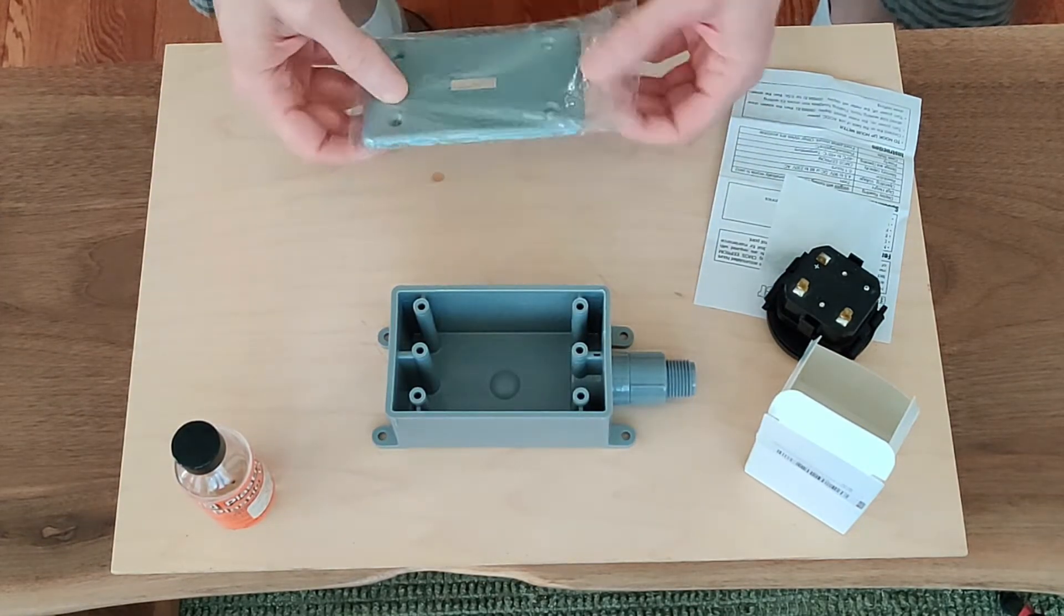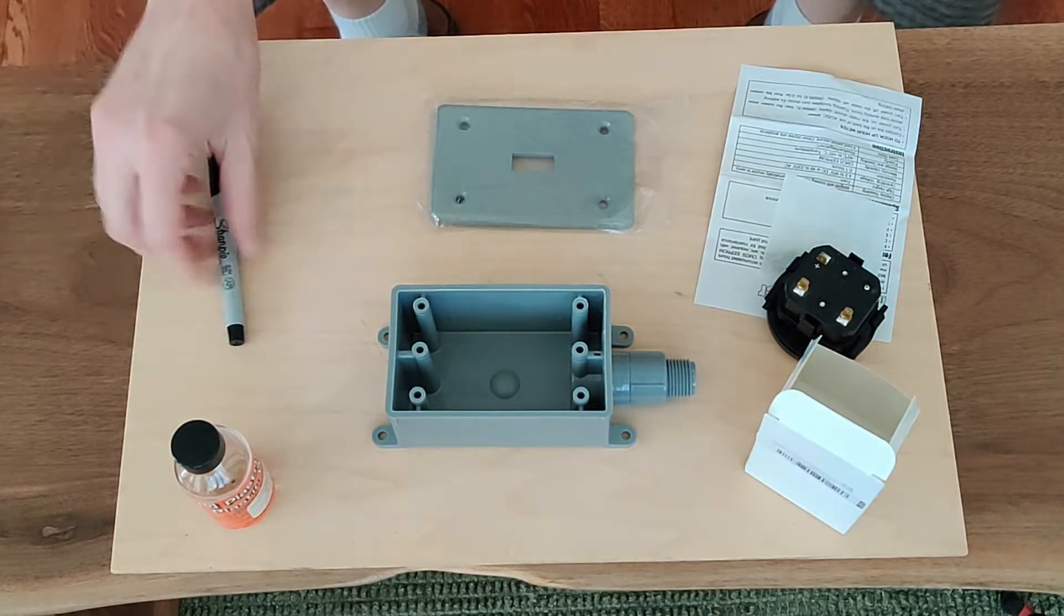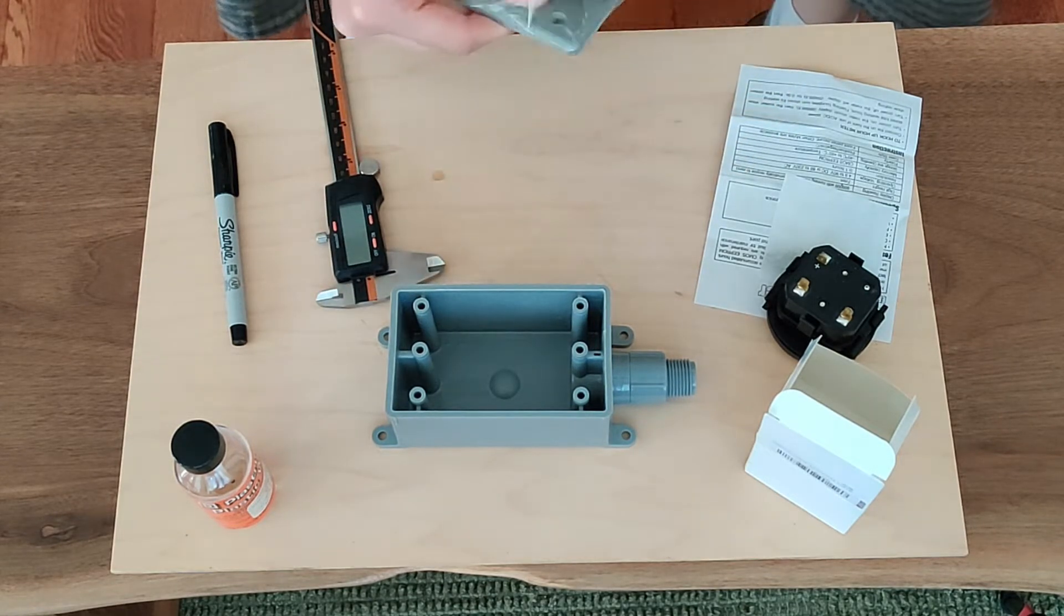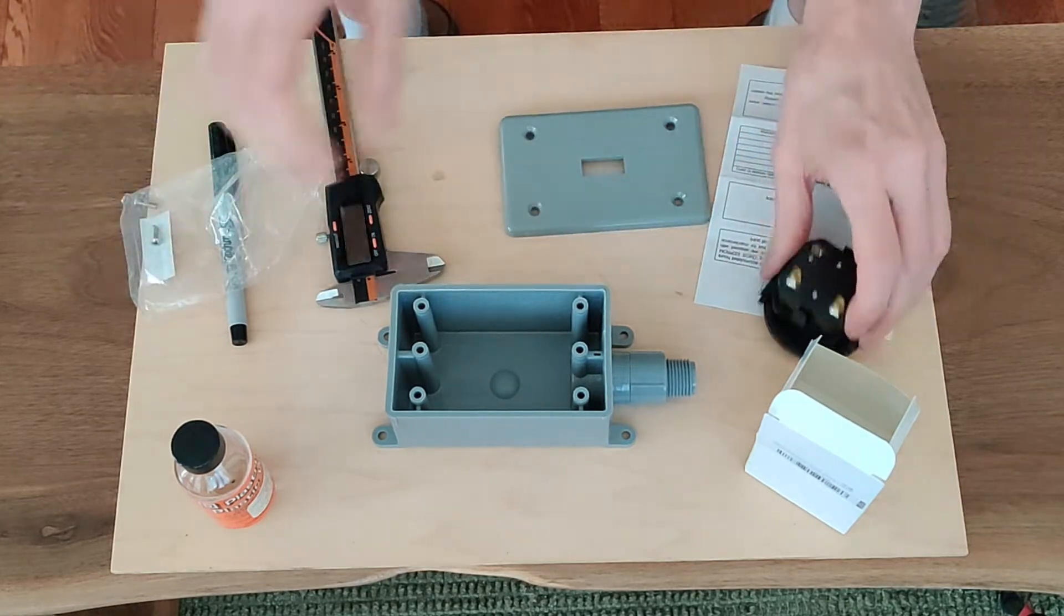So here's the face plate and I'm going to outline the hole for the meter roughly, and I'll take that downstairs with a coping saw and cut that out. Then there it is, all cut out. It looks pretty nice.